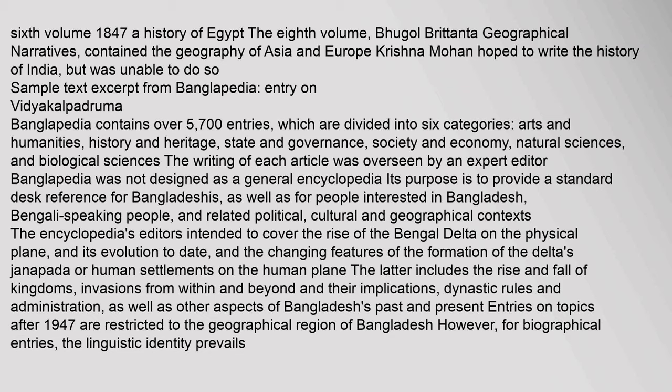Banglopedia contains over 5,700 entries, divided into six categories: arts and humanities, history and heritage, state and governance, society and economy, natural sciences, and biological sciences. The writing of each article was overseen by an expert editor. Banglopedia was not designed as a general encyclopedia; its purpose is to provide a standard desk reference for Bangladeshis, as well as for people interested in Bangladesh, Bengali-speaking people, and related political, cultural, and geographical contexts.